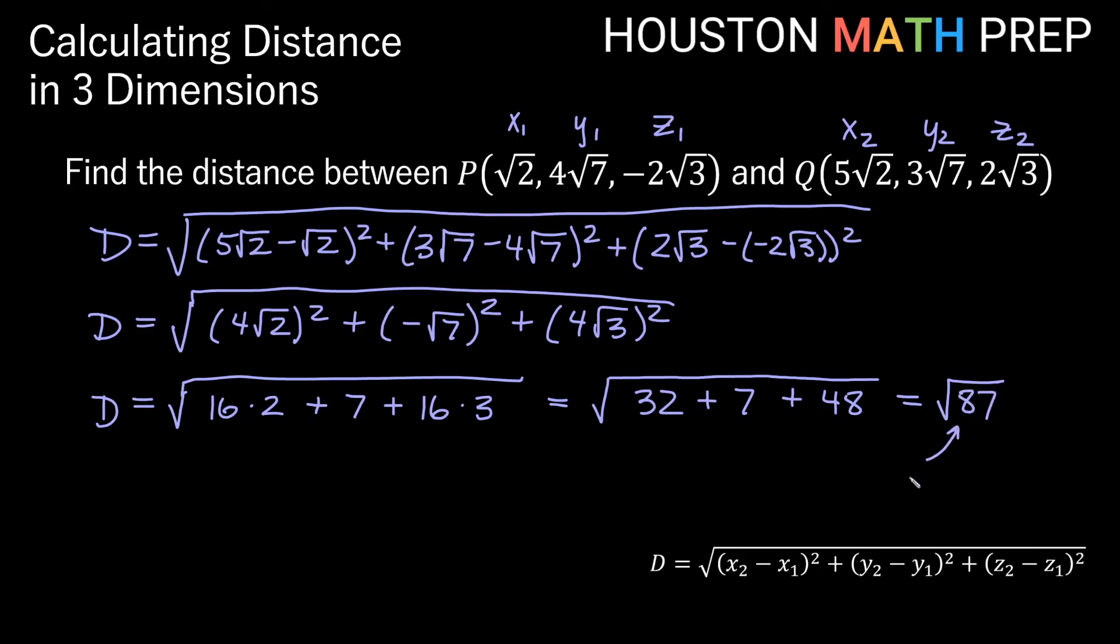And it turns out we can't simplify this. 87 is just 3 times 29, and both of those are prime. Neither one's a perfect square. So we'll go ahead and leave this √87 as our simplified version of the answer for the distance between these two points.